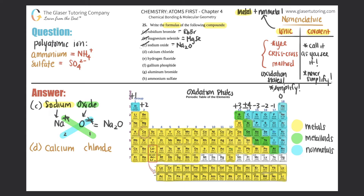Part (d): calcium chloride. Calcium is a metal, so it's automatically ionic. Calcium is Ca and it's in group two, so that's a +2 charge. Chloride comes from chlorine, Cl, which is all the way over here — that's a -1. The +2 crisscrosses telling me I need two chlorines; the -1 tells me I need one calcium. With a 1 present, it's already simplified: CaCl₂.